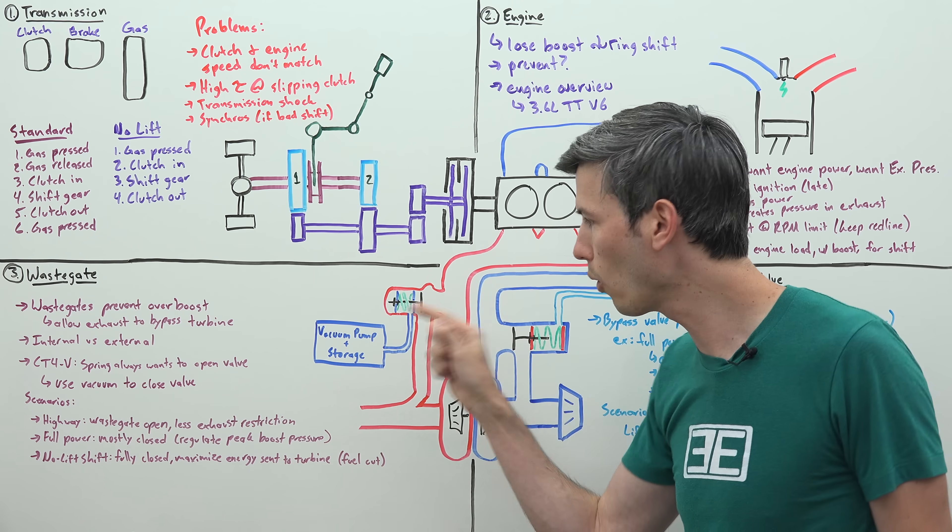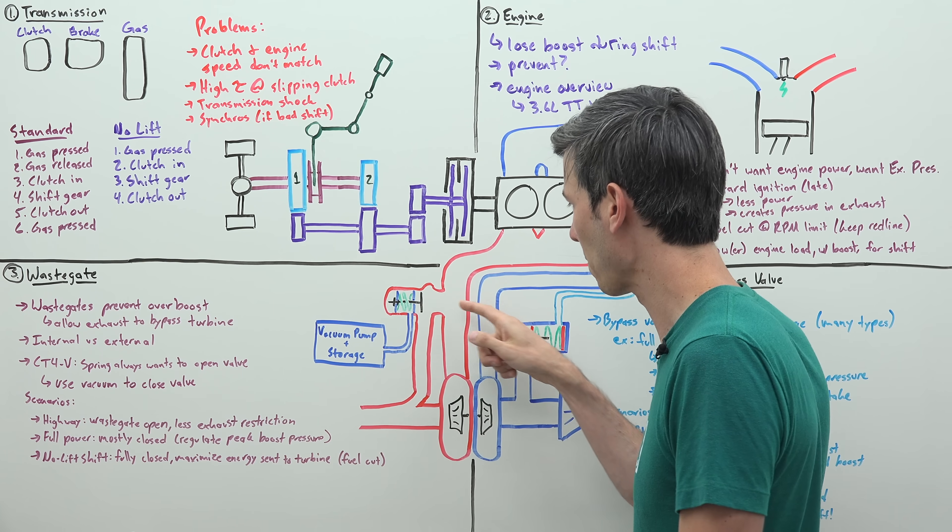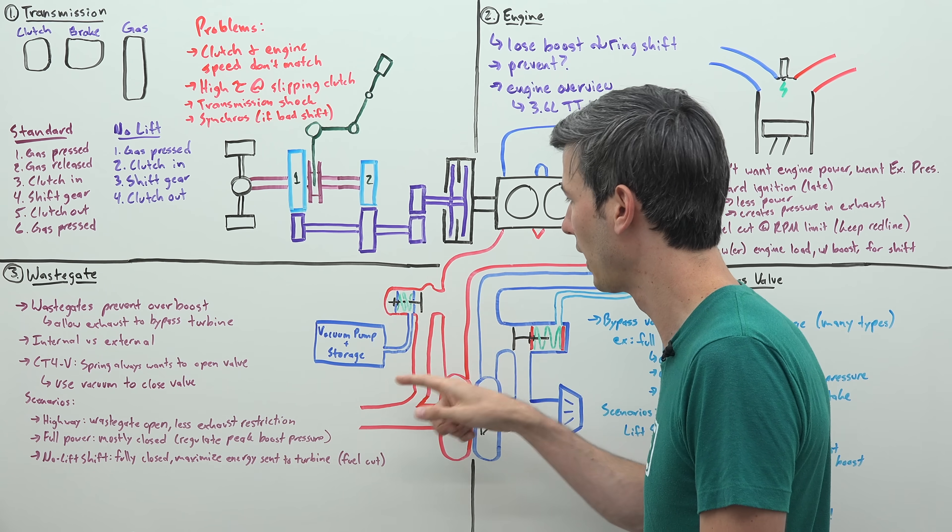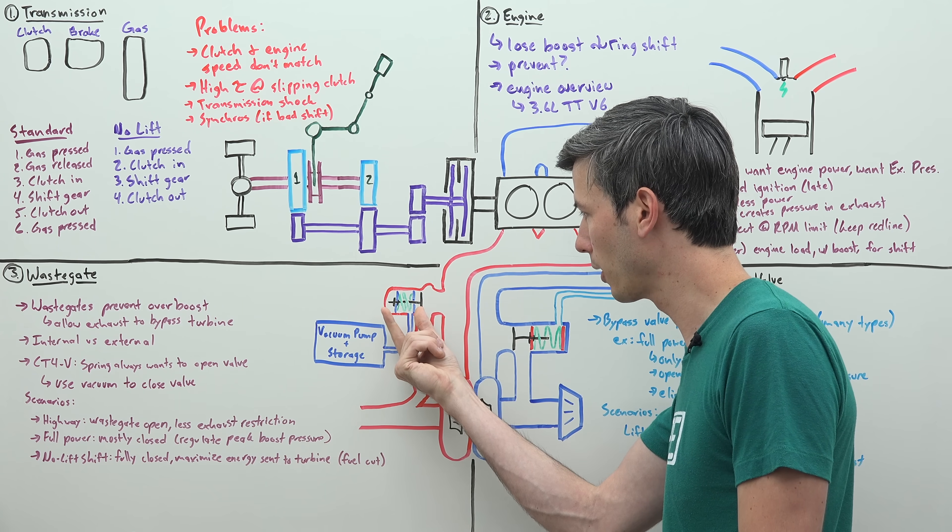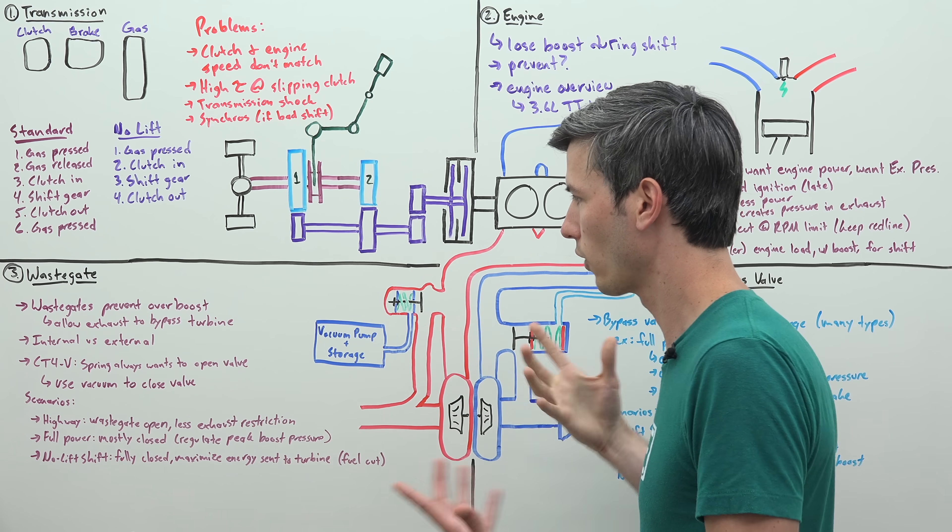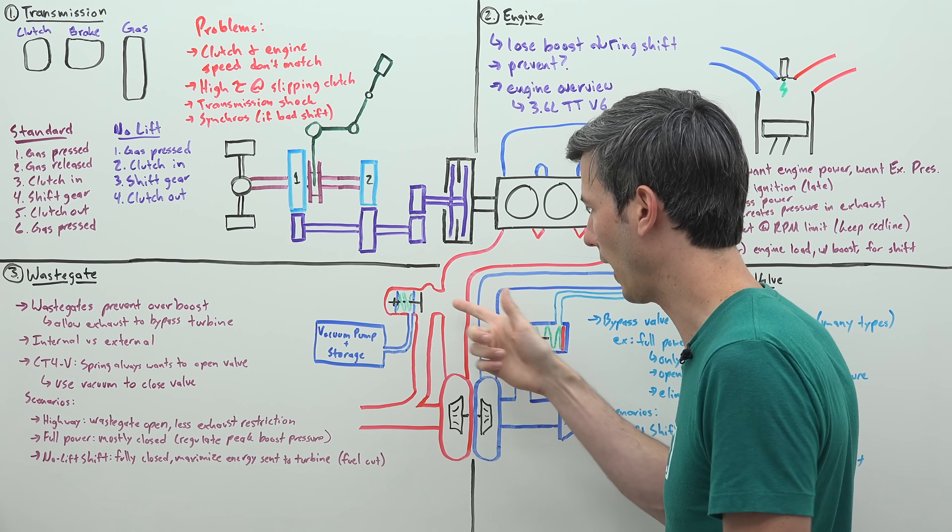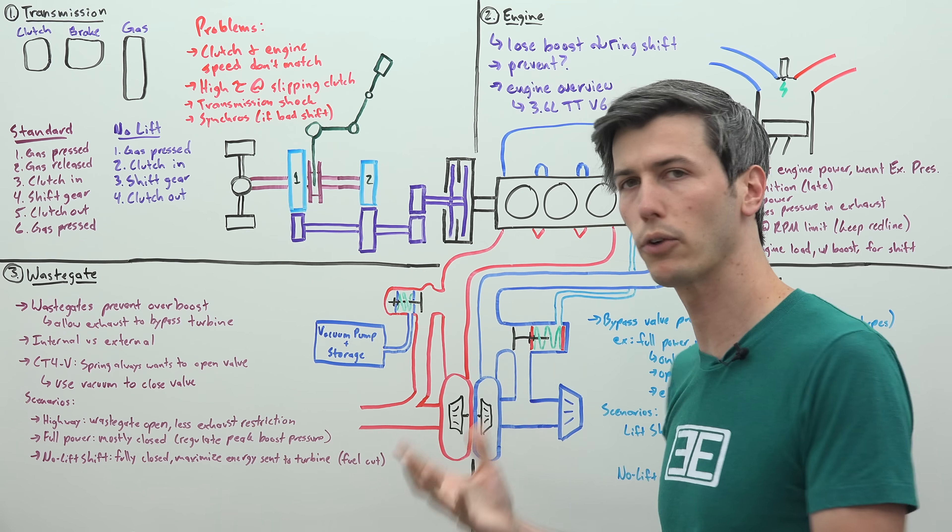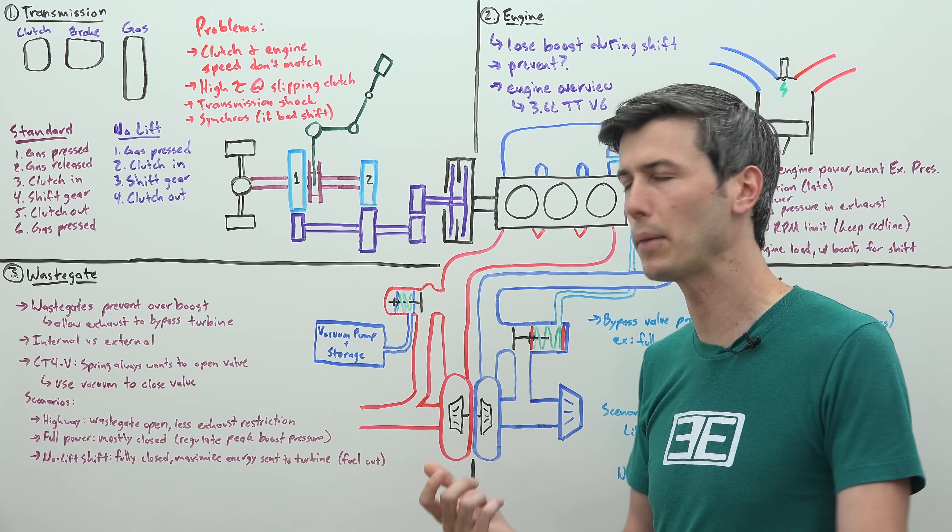So the wastegate has a spring that's always trying to open up that valve. And so the valve wants to be open, and then you use a vacuum, and you pull a vacuum to squeeze that spring down and close off this valve. So let's talk about different scenarios and how you're using this wastegate. If you're on the highway, if you're idling, if you don't have much load...